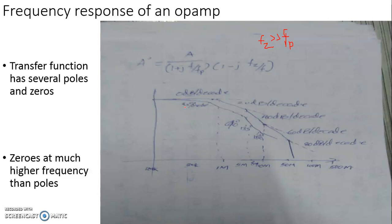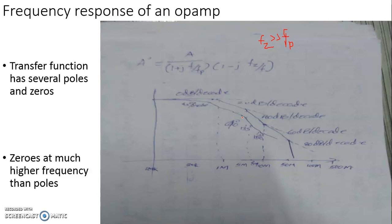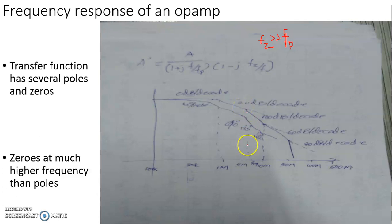The output will be lagging behind the input by an angle of 45 degrees. Beyond this frequency, as the frequency increases, the gain falls at a roll-off rate of 20 dB per decade, eventually giving rise to a maximum phase difference of 90 degrees. This roll-off continues until the next pole frequency is reached. At the second pole, the gain falls an additional 3 dB and shows a steeper roll-off, adding another 20 dB per decade, so beyond the second pole frequency the roll-off rate is 40 dB per decade.